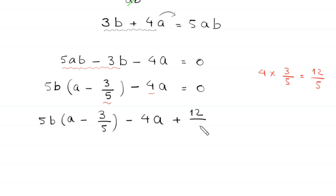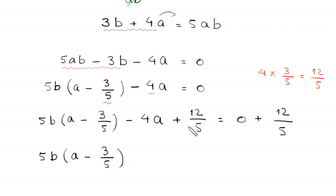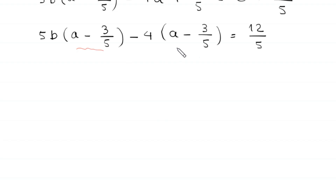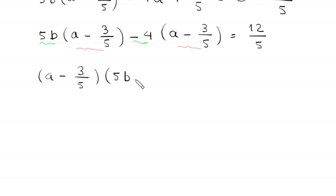We add 12 over 5 to the left-hand side and 12 over 5 to the right-hand side. From the terms involving a, we factor out negative 4, leaving (a minus 3 over 5). Now a minus 3 over 5 is a common factor, so we factor it out: (a minus 3 over 5) times (5b minus 4) is equal to 12 over 5.